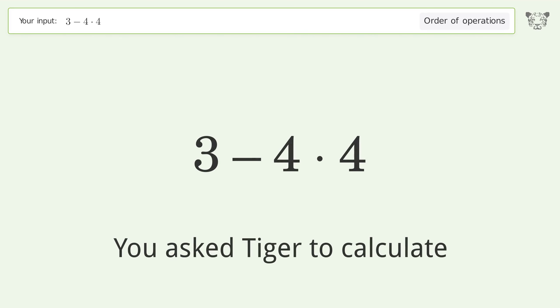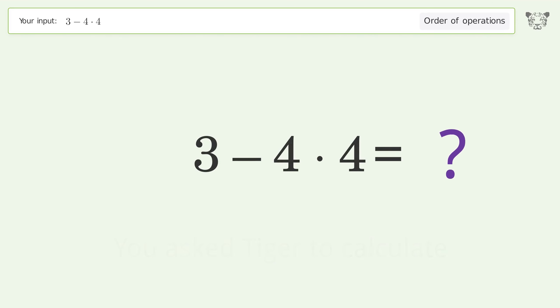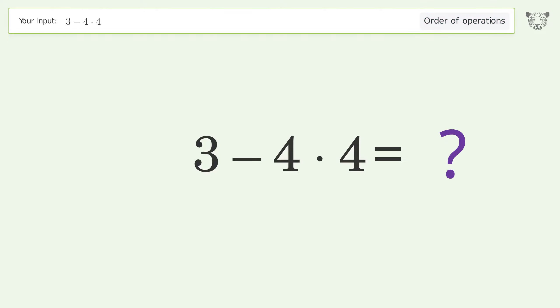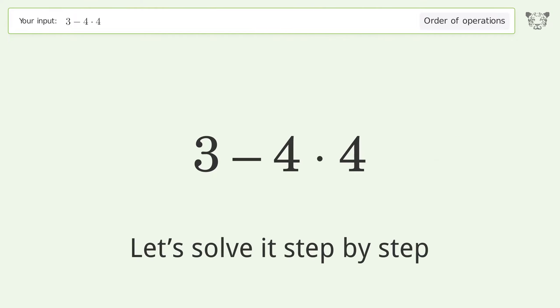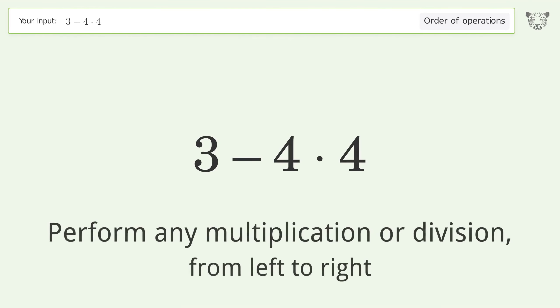You asked Tiger to calculate. This deals with the order of operations. The final result is negative 13. Let's solve it step by step.